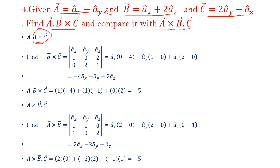First, take B cross C by writing the unit vectors ax, ay, az and putting the coefficients for B and C. B cross C equals minus 4ax minus ay plus 2az. Then A dot (B cross C) is 1 times minus 4 plus 1 times minus 1 plus 0 times 2, which equals minus 5.